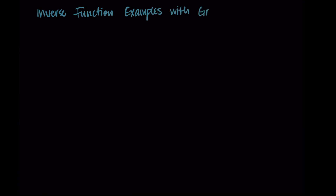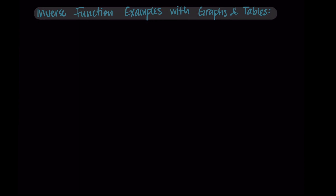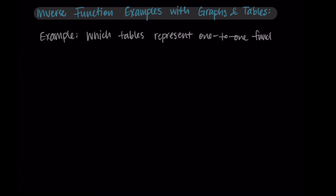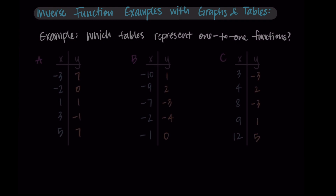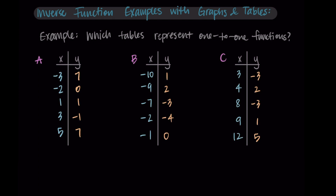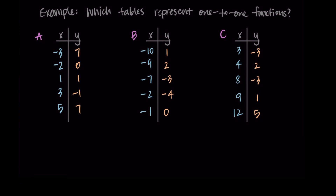Welcome back. In this video we're going to do some examples of inverse functions with both graphs and tables. We'll jump right into the examples. First I'll ask which tables represent one-to-one functions, and I'll give three tables: table A, table B, and table C. These have x values as inputs and y values as outputs. In order to tell if these are one-to-one, we want every input to have only one output and every output to have only one input.